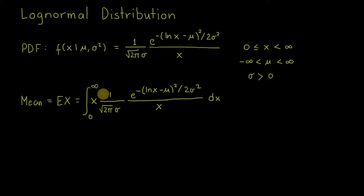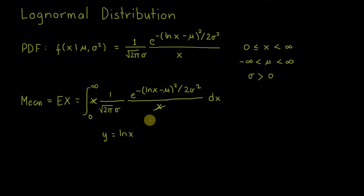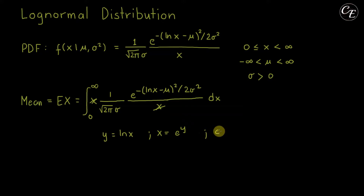We can cancel out the x in the numerator and denominator. Then we simplify this integral expression by applying the transformation y = ln(x). From here, x = e^y, and dx is the derivative of this, which is e^y dy.